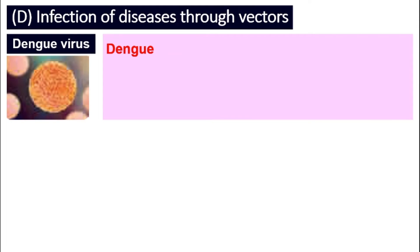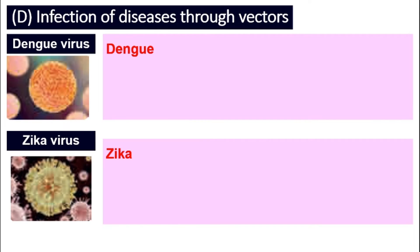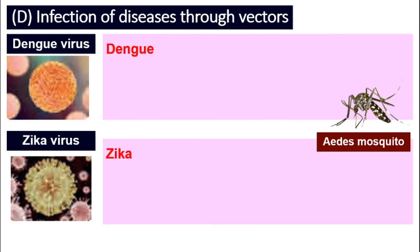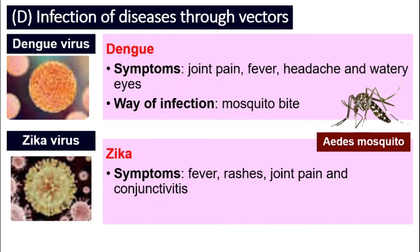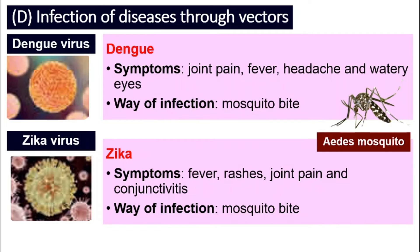Dengue is spread by the dengue virus, and zika by the zika virus. Both of these diseases are spread through the vector of the Aedes mosquito. For dengue, the symptoms are joint pain, fever, headache, and watery eyes, and the way of infection is mosquito bite. For zika, the symptoms are similar — fever, rashes, joint pain, and also conjunctivitis — and the way of infection is also mosquito bite.